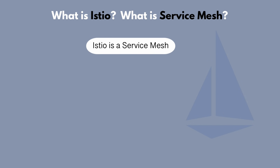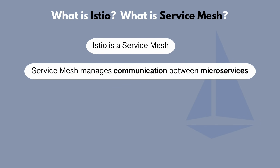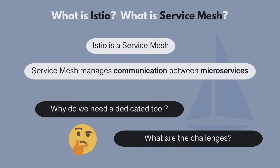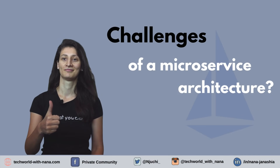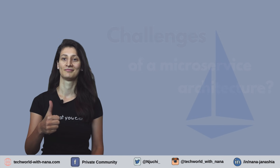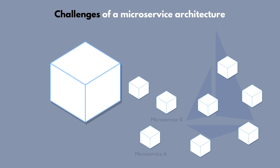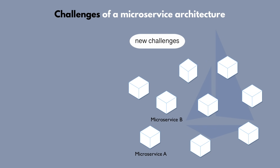The service mesh is a popular solution for managing communication between individual microservices in a microservice application. So why do we need a dedicated tool for microservices communication and what are the challenges? When we move from monolith to microservices application, we introduce a couple of new challenges that we didn't have with a monolith application.